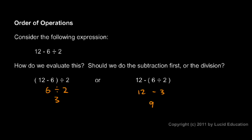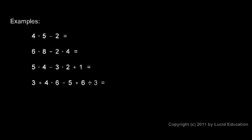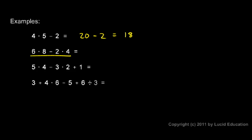Here are some examples. For 4 times 5 minus 2, I'll rewrite this problem and do the multiplication first, before the subtraction. So instead of 4 times 5 minus 2, I write 20 minus 2 — I've substituted 20 for 4 times 5. Rewriting in steps like this ensures I do the multiplication first and leave the subtraction for afterward. Then 20 minus 2, which you can do in your head — that's 18.